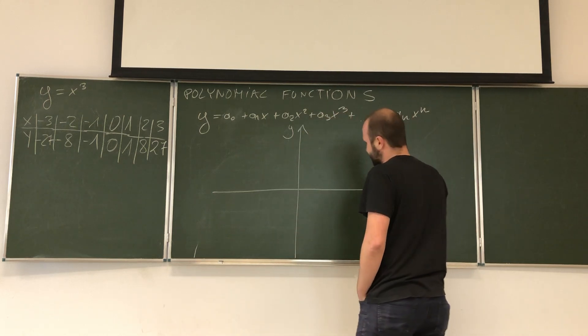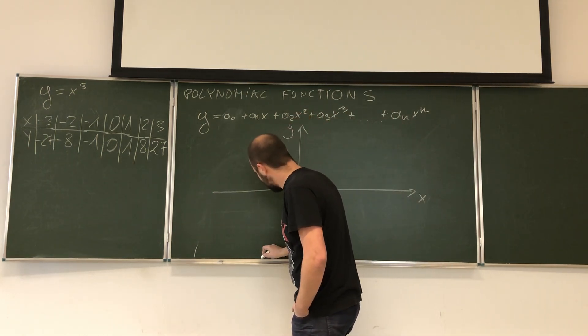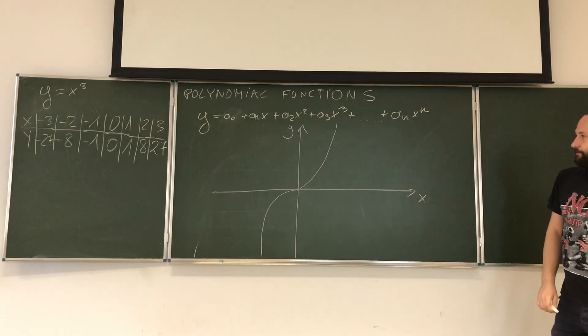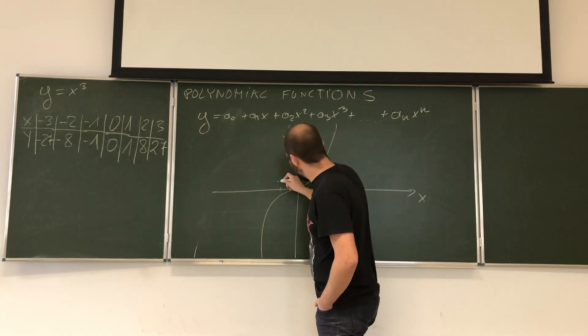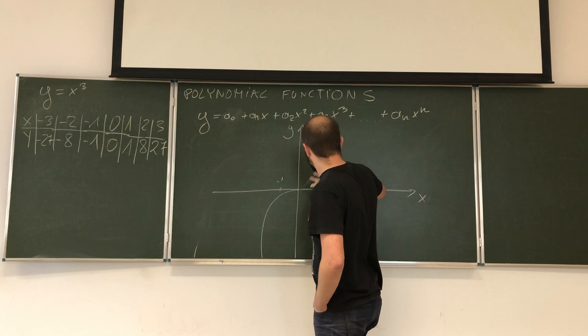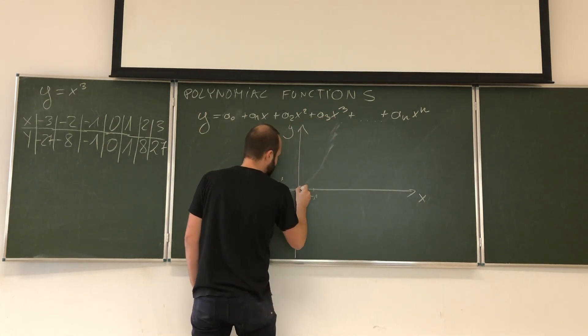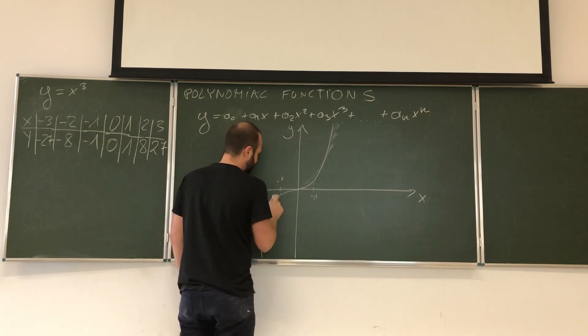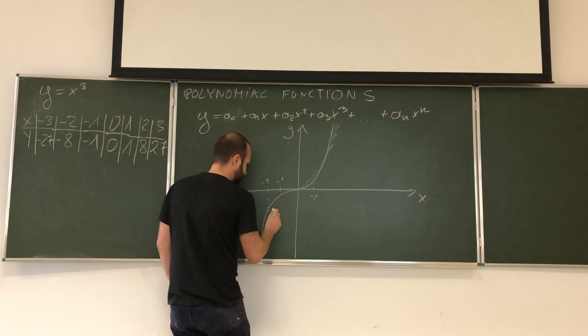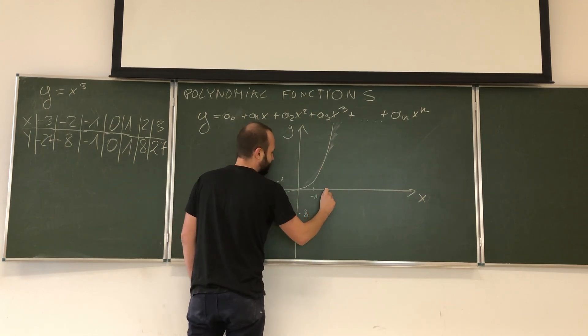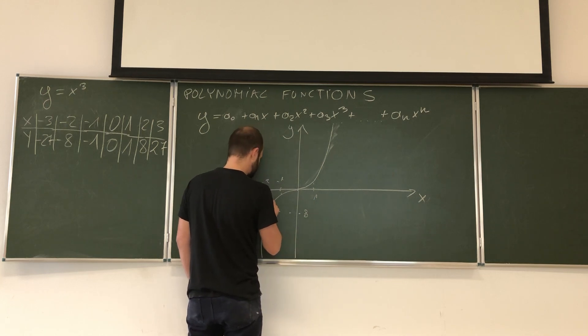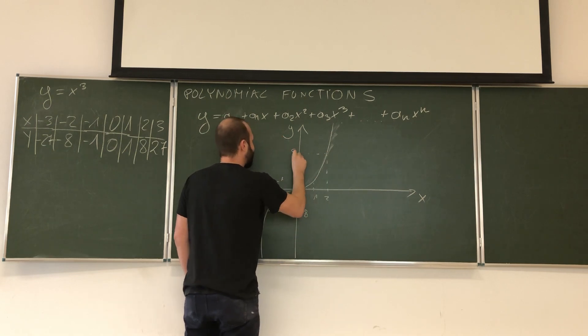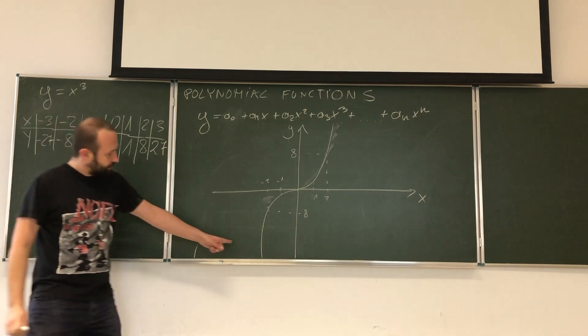Here we have y, here we have x. And look, this function actually looks like this. Look, over here we would have negative 1, negative 1. Of course it should be symmetrical, but again another problem. So here we have 1, negative 1, for negative 2 we will have negative 8, and for 2 we will have 8. So as you see, this function is always growing.